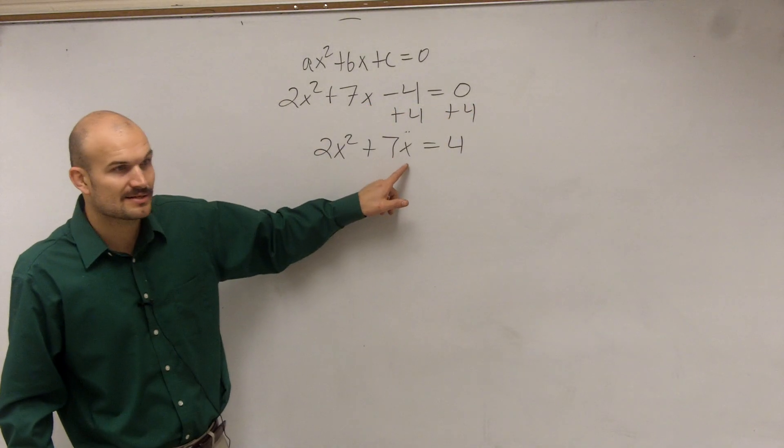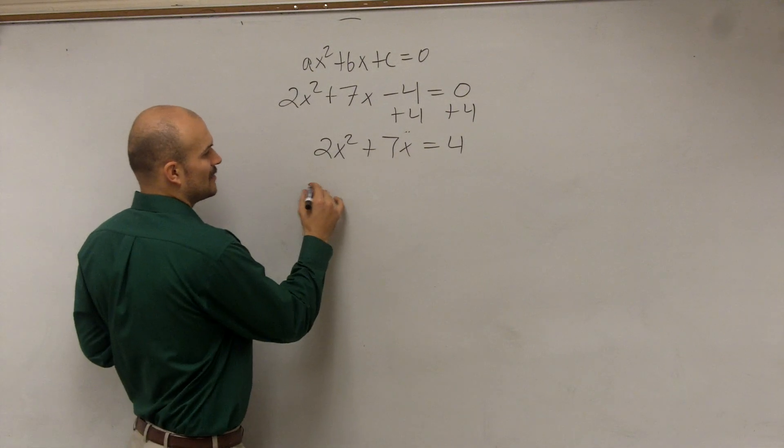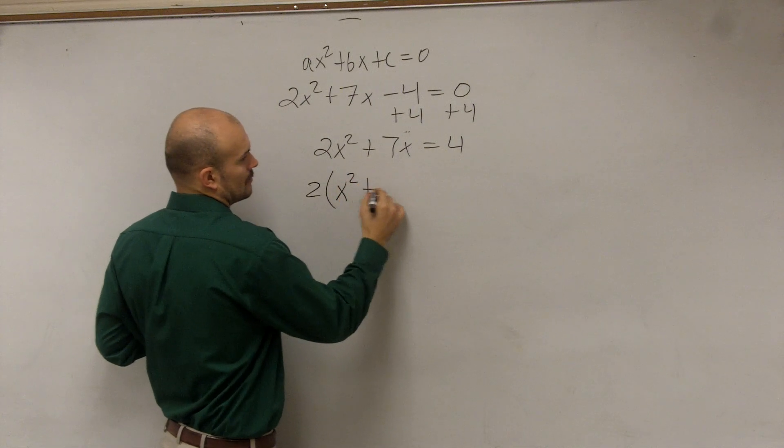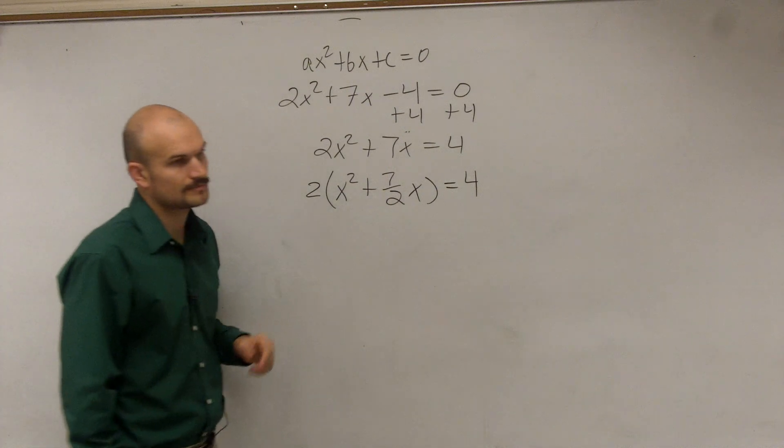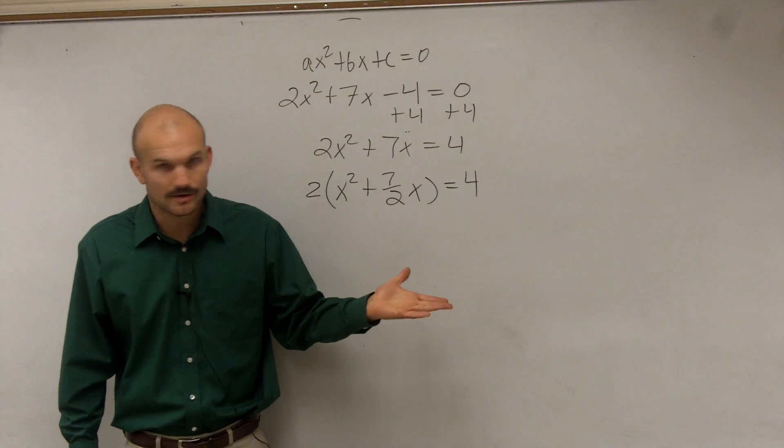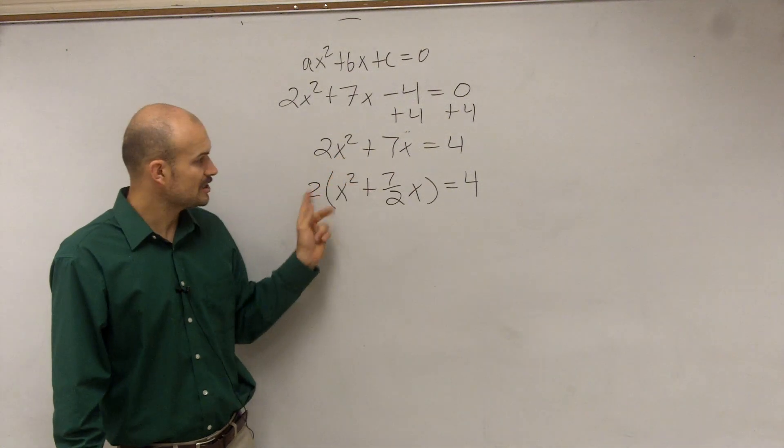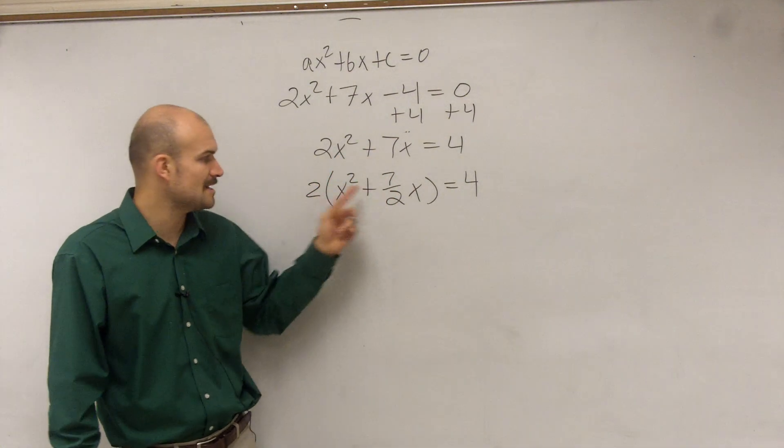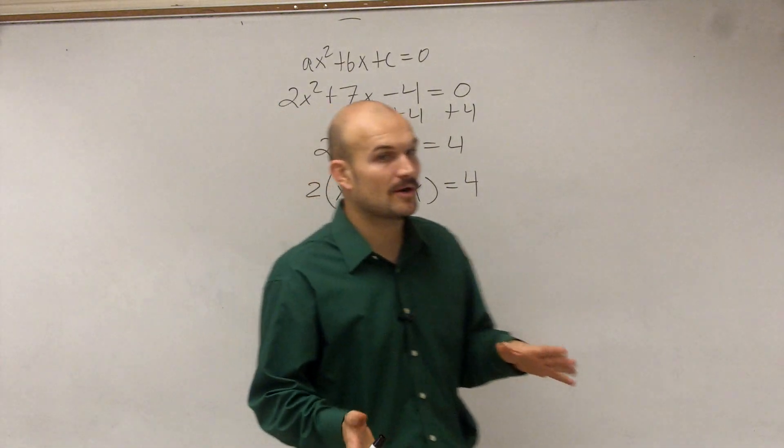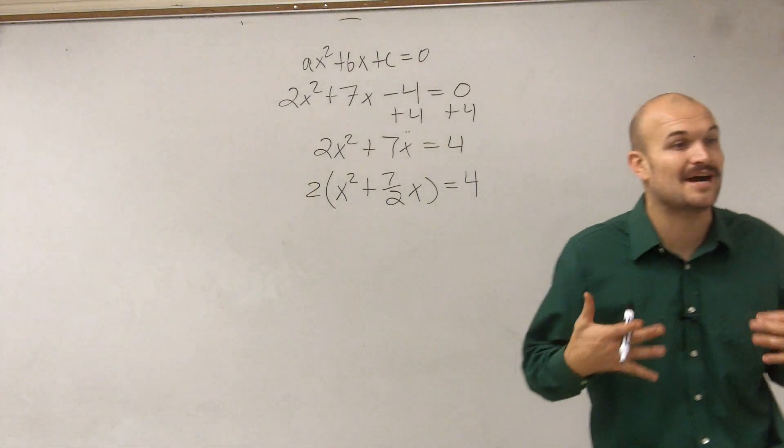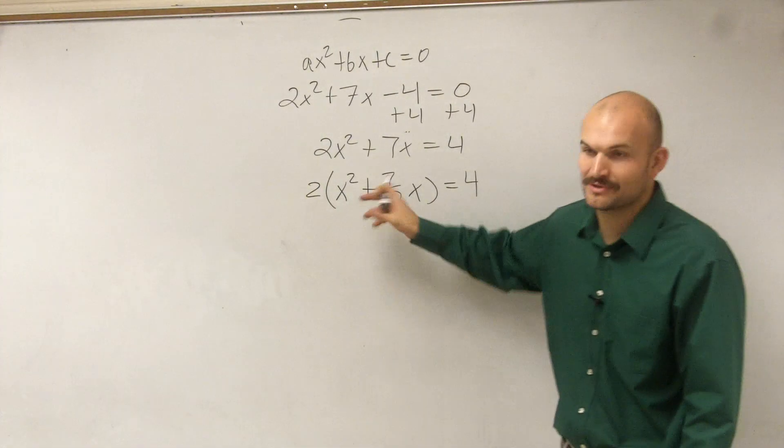Now, this becomes a little bit difficult, because that 7, you can't factor 2 out of 7. So when you factor it out, it's going to look like this: 2 times x squared plus 7 halves x equals 4. Now, did I do everything mathematically correct? Does 2 times x squared give you 2x squared? Yes. Does 2 times 7 halves x give you 7x? Yes. OK. So remember, when we factor out, usually we talk about factoring things out evenly. You can still factor things out unevenly to provide you with fractions.